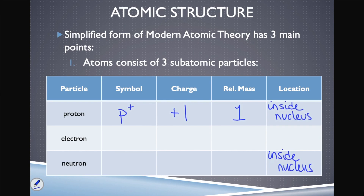Let's talk about a neutron. A neutron we can symbolize as N with a little zero. Why is there a zero? Because a neutron has no overall charge — it is neutral, which sounds a lot like neutron, so that's how you can remember it. The relative mass of a neutron is also one.